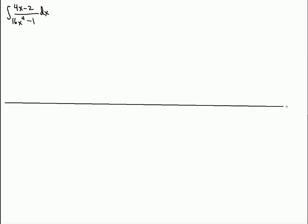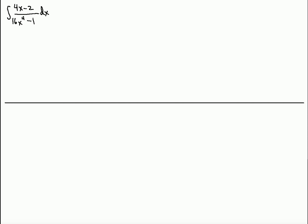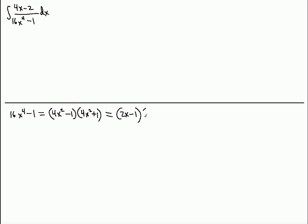I'm going to do work on this side of the board to make it easier. First we need to factor 16x⁴ - 1. That can be factored as (4x² - 1)(4x² + 1). Notice that the second factor is a prime factor and cannot be factored, but the first one can: (2x - 1)(2x + 1)(4x² + 1).